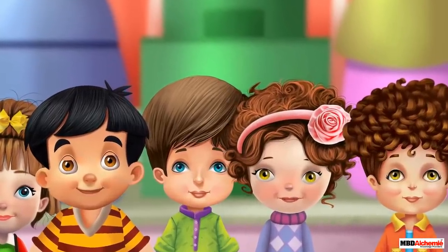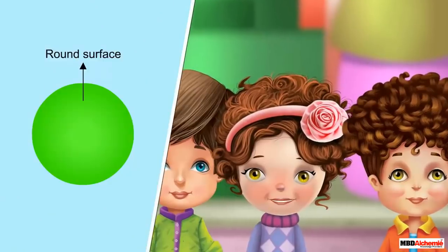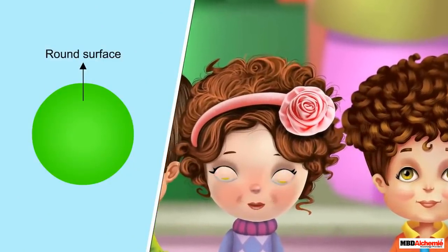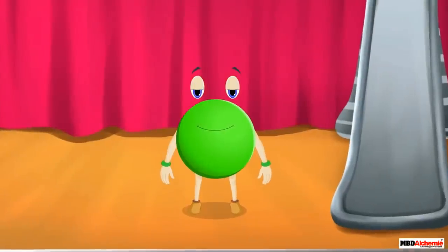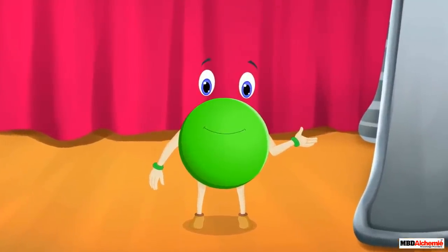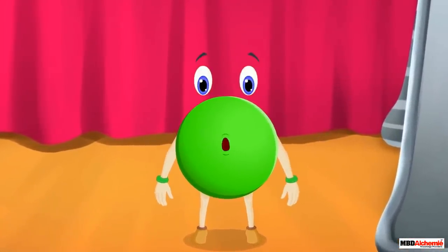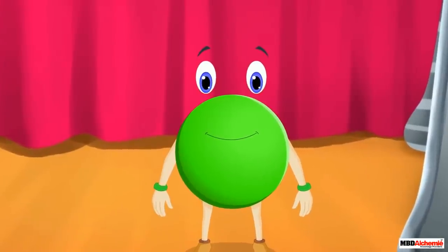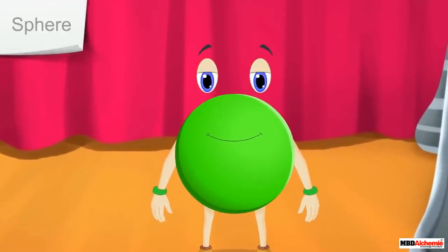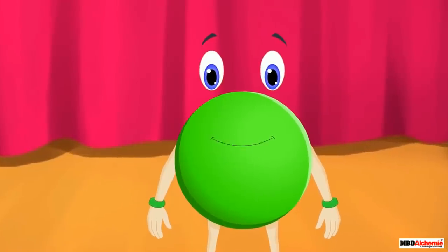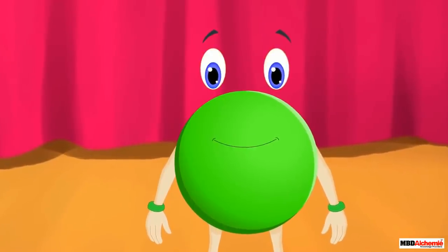I know why you rolled down from the swing — it's because you have a round surface. Yes, you are right! I have a special name too. It's sphere. My friend will speak now.